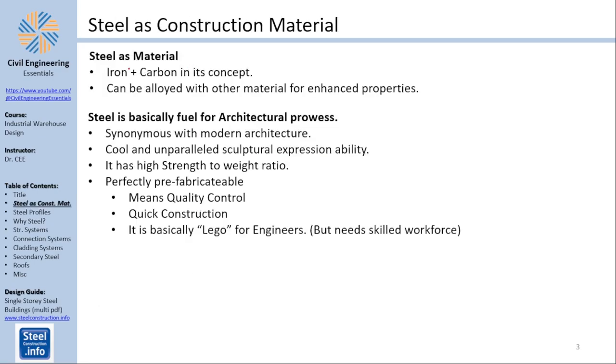Steel as a material. Steel is made out of iron plus carbon to improve its characteristics plus any alloys to try to enhance properties. Now steel is basically fuel for architectural prowess. Steel structure is like a synonym to modern architecture. You have cool and unparalleled sculptural expression abilities because you can form it as much as you see fit.